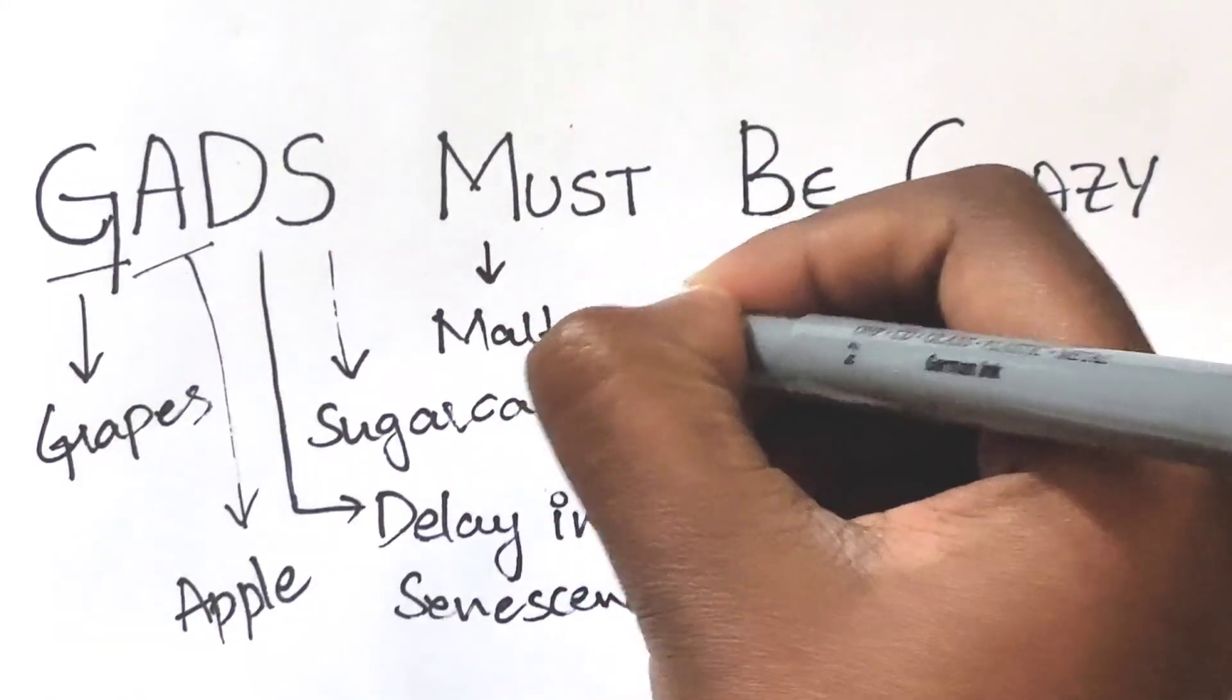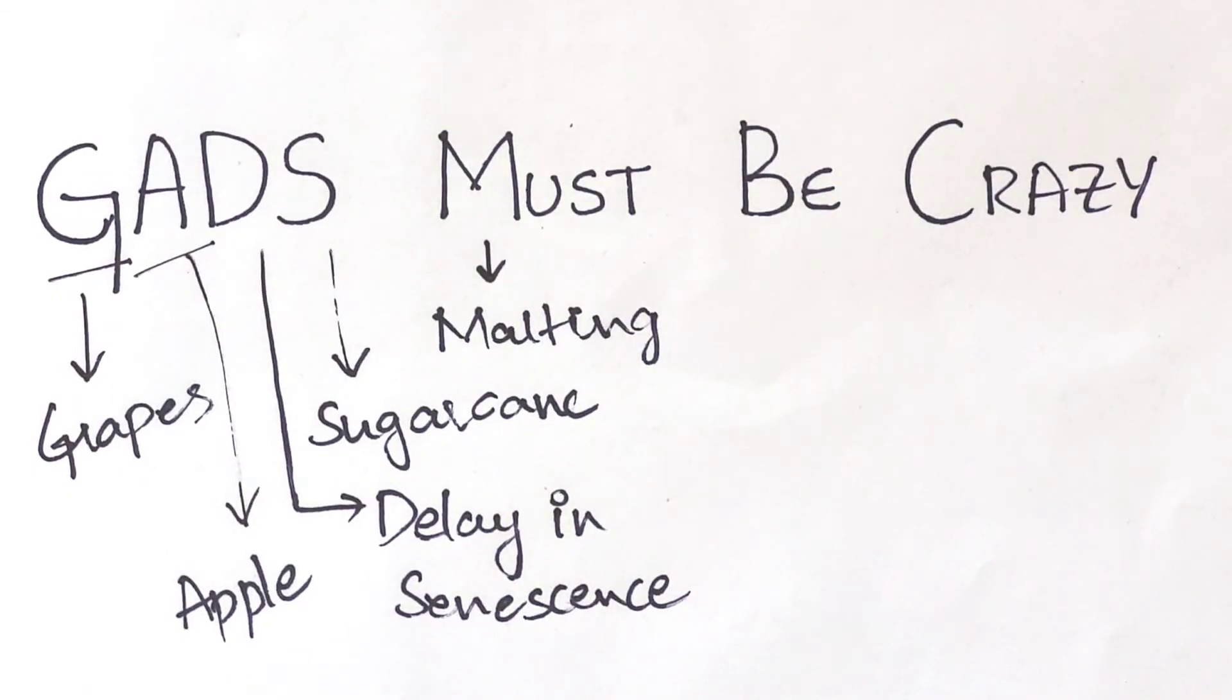M for malting. Gibberellic acid fastens the malting process in brewing industry.